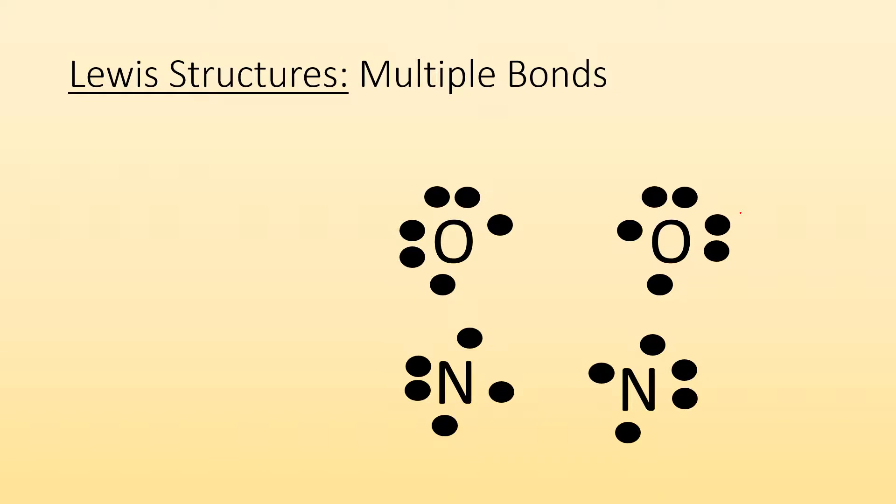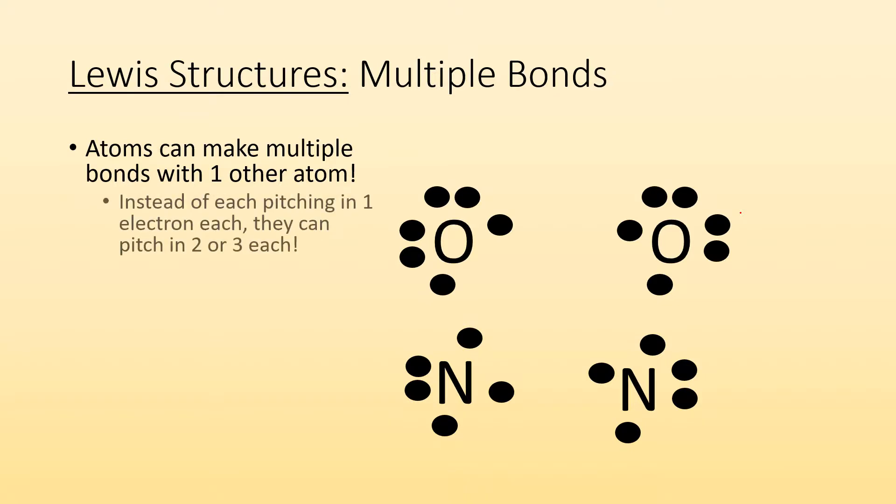So let's get into multiple bonds. They don't all have to be single bonds. So atoms can make multiple bonds with one other atom. So instead of each pitching in one electron each, they can each pitch in multiple, two or three each. So for example, here, oxygen, well, I know it needs to make two bonds. It just made a single bond with that other oxygen. It's kind of like they're going, hey, that was great, but like, I still need to make another bond. The other oxygen's like, OMG, me too. You want to make another bond with me? And the other guy, so that's a great idea. So they pitch in another set of electrons. Then that way, they end up with an octet.